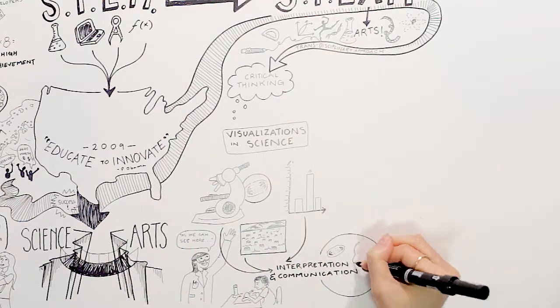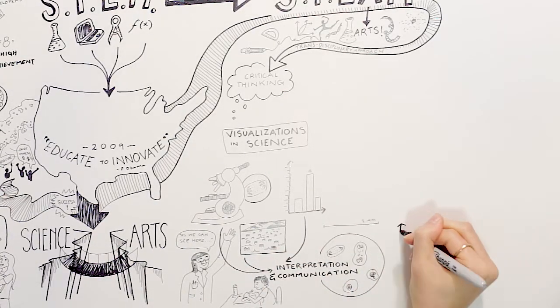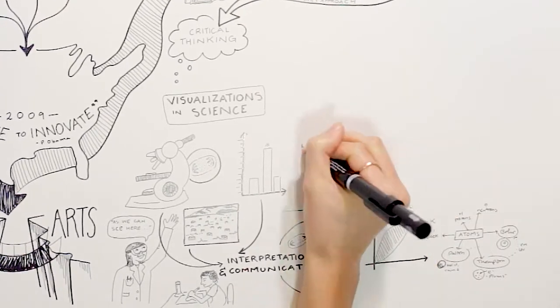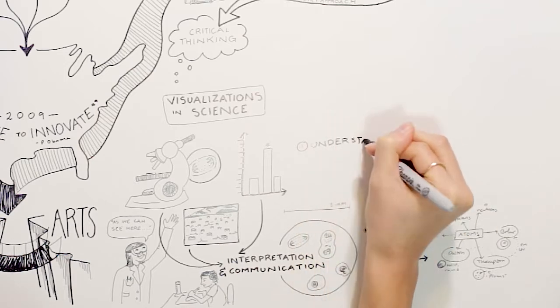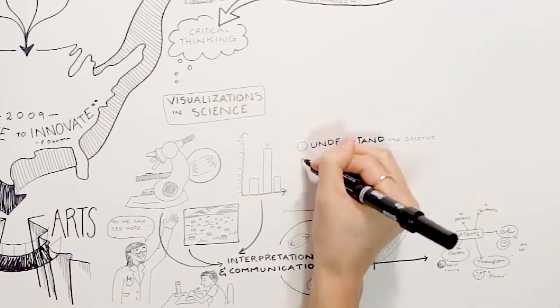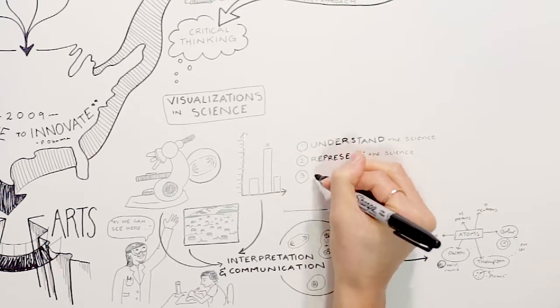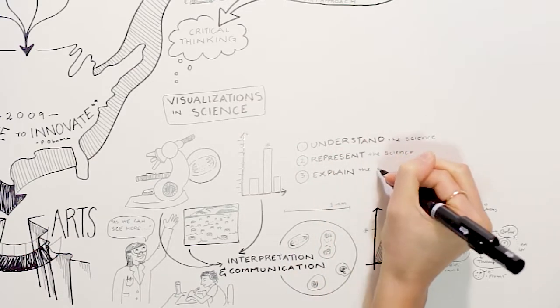Asking students to explain what they drew, justify their model, or evaluate one's depiction compared to another, tasks students with the challenge of first, understanding the scientific phenomenon occurring, deciding how to best represent that phenomenon visually, and learning how to explain their scientific representation in words or in writing.